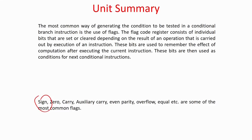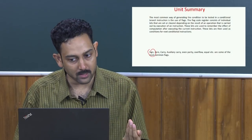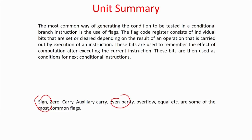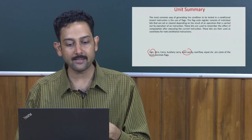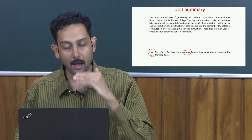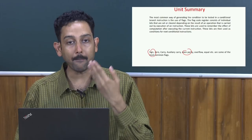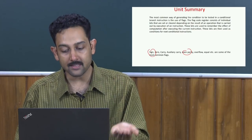When some instructions like ADD are executed, certain flags will be set in the flag register depending on the value of the operation. For example, if I subtract two numbers and the answer is 0, the flag bit corresponding to zero will be set. If I add two numbers and the sum is 5, the zero flag bit will be reset because the answer is more than 0. Since 5 = 1 0 1 is an odd parity number, the even parity bit will be reset.